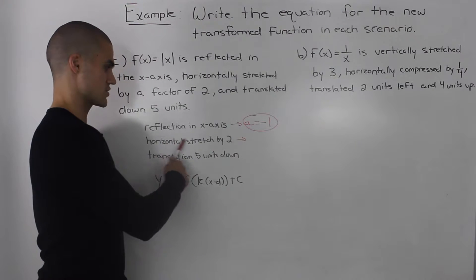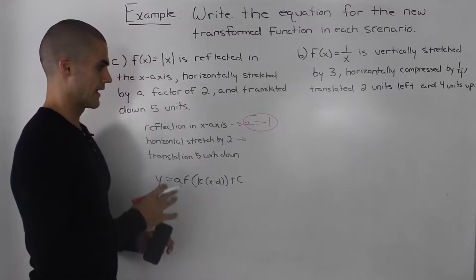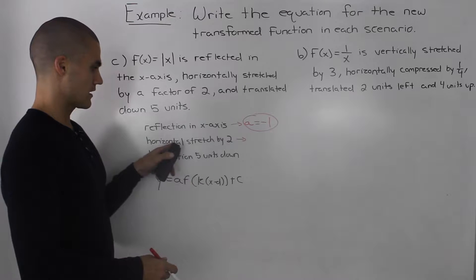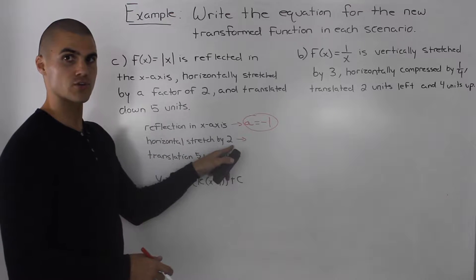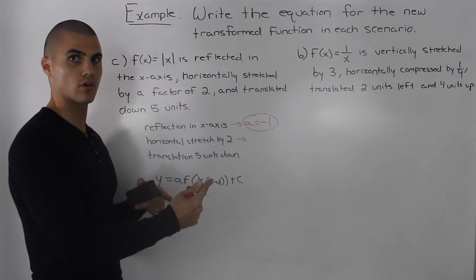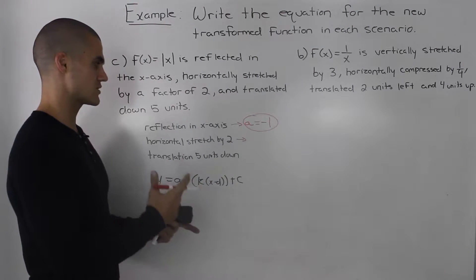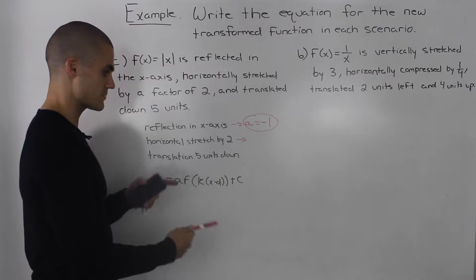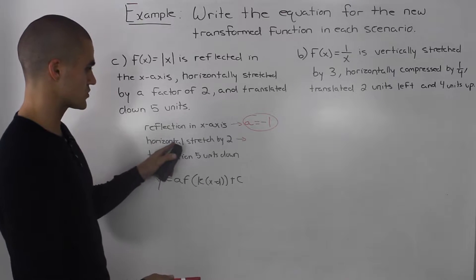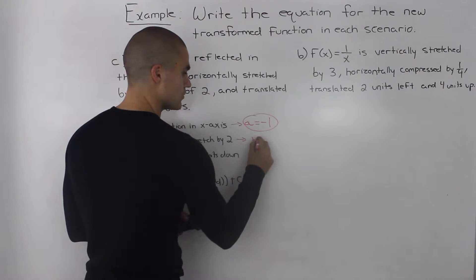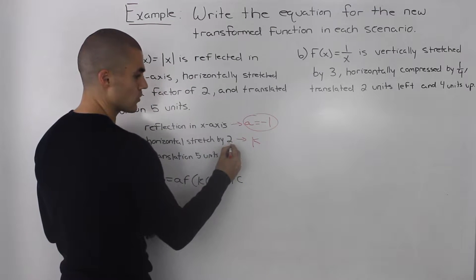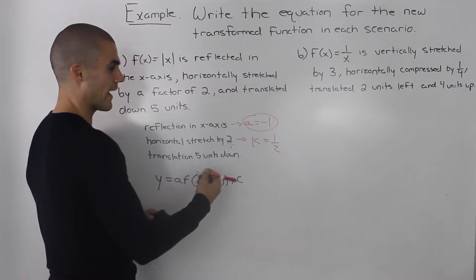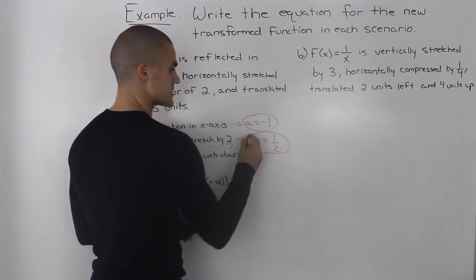The next transformation is this horizontal stretch by a factor of 2. If you look at your cheat sheet with all of the transformations, the factor of a horizontal stretch or compression is the reciprocal of the k value. So since this was horizontally stretched by a factor of 2, the k value is the reciprocal of 2, which is 1 over 2. And because it's not reflected in the y-axis, the k value is positive — so k equals 1 half.